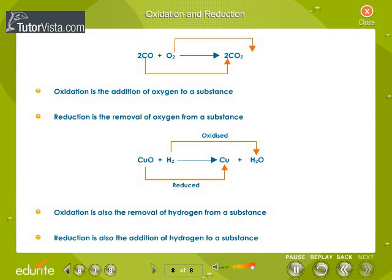Oxidation and Reduction: observe these chemical equations. Carbon monoxide changes to dioxide by the addition of oxygen. Cupric oxide changes to copper by the removal of oxygen. When oxidation and reduction happen in the same reaction, it is called a redox reaction.